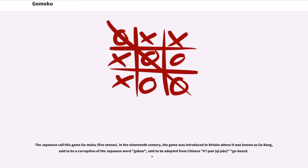The Japanese call this game Gomoku, five stones. In the 19th century, the game was introduced to Britain where it was known as Gobang, said to be a corruption of the Japanese word Goban, said to be adopted from Chinese Keepan, Cheepan, Go board.